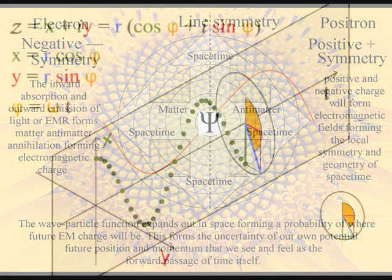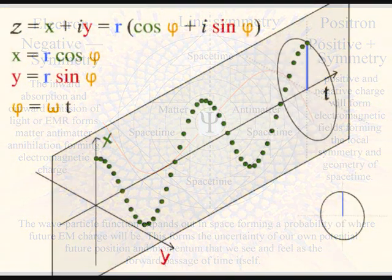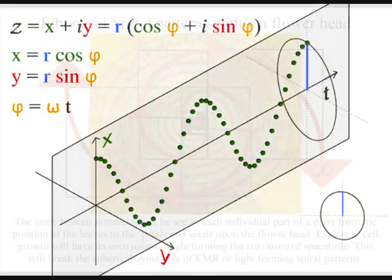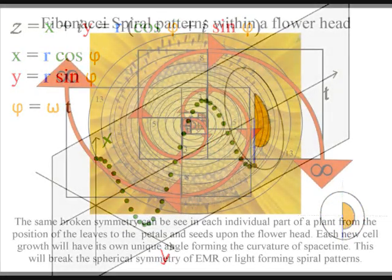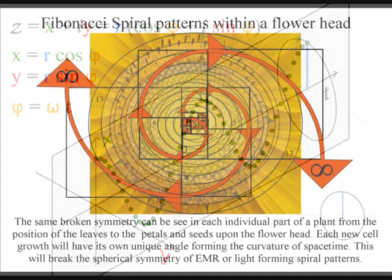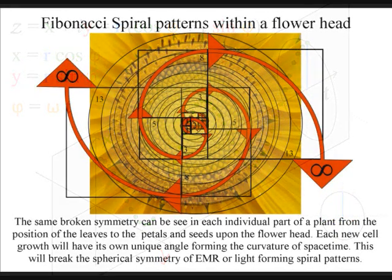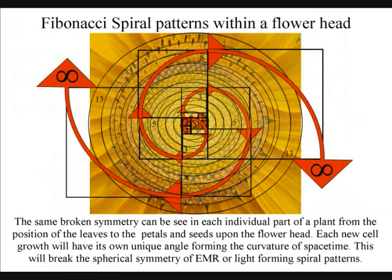Charged particles that repel become equally displaced along the curvature of their own created spacetime. The same broken symmetry can be seen in each individual part of a plant, from the position of the leaves to the petals and seeds upon the flower head.